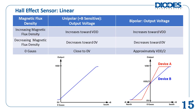A linear Hall Effect sensor outputs a voltage that is proportional to the detected magnetic flux density. They often incorporate a ratiometric design such that the output voltage scales with the supply voltage VDD, and are therefore also called ratiometric linear Hall Effect sensors. The slope of the output voltage response is known as sensitivity and is measured in millivolts per Gauss. The higher the sensitivity, the lower the linear magnetic sensing range. The linear magnetic sensing range is the range of magnetic flux density in which the sensor's output voltage response remains linear. Sensitivity also increases with an increase of the VDD supply voltage, which can alter the linear magnetic sensing range.